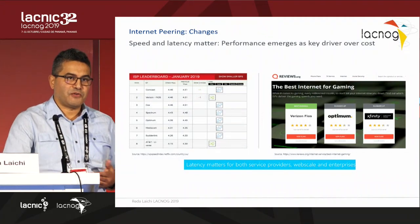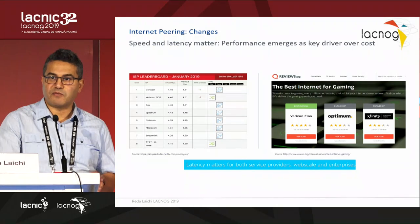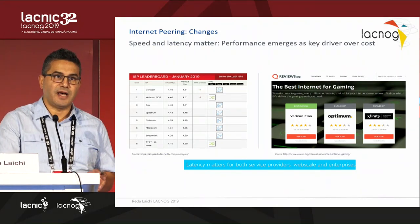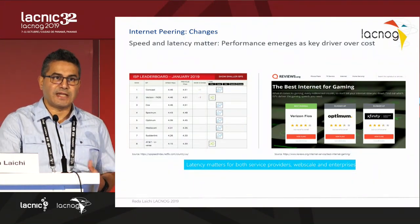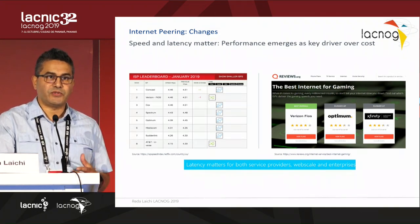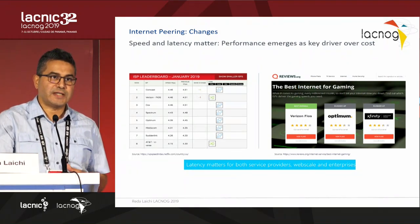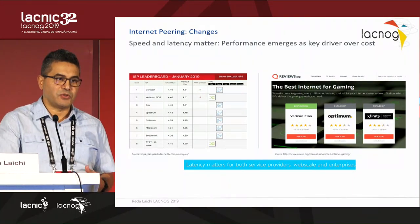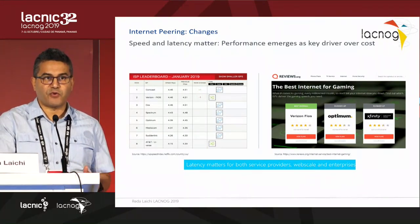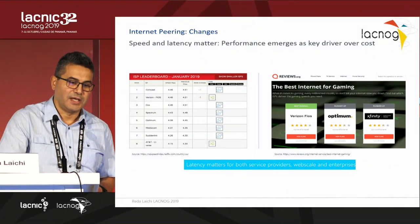Another factor is performance. Performance today is not just a differentiator for service providers or enterprises — it's really a must-have for certain businesses or applications to operate. Examples include financial companies that need certain latency to function, and resiliency for CDN content that needs load balancing. Performance is a must-have factor here.